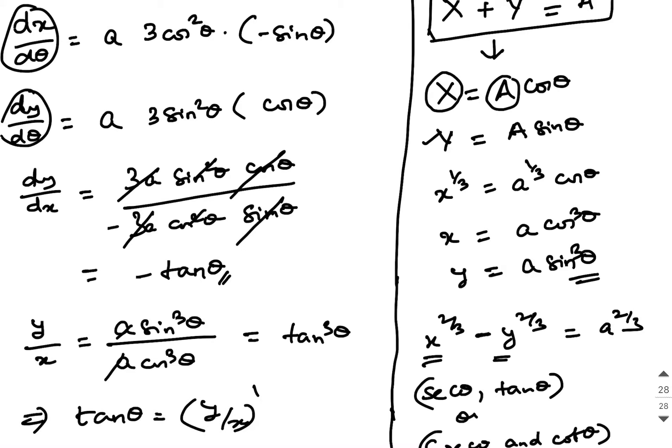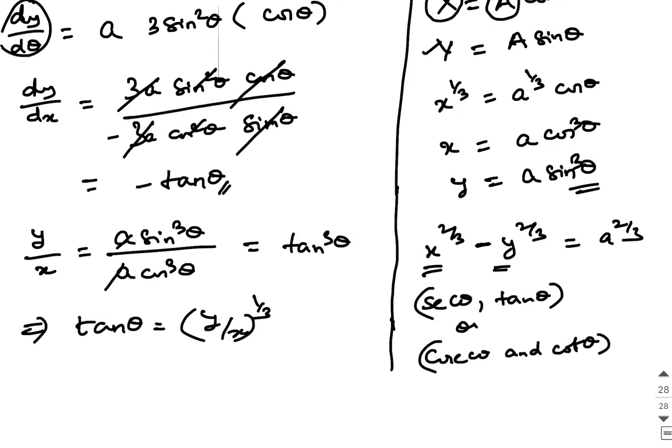Tan theta will be y by x power 1 by 3. So, dy by dx is equal to since dy by dx is minus tan theta, instead of this we will write it as minus y by x to the power 1 by 3, which is nothing but the cube root of y by x.